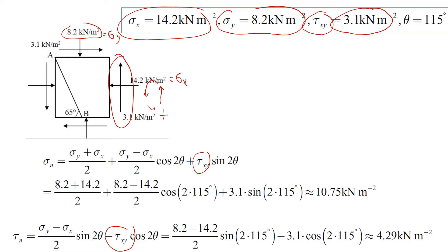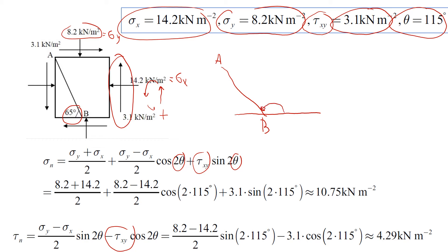Now for angle theta used in all these formulas: I put it as 115 degrees even though the diagram shows 65. The way we define this angle is to measure from the horizontal line. We always start from the right hand side before the plane and measure all the way to the plane. Even though we're given 65 degrees, we always take this angle — 180 minus 65 equals 115 degrees.